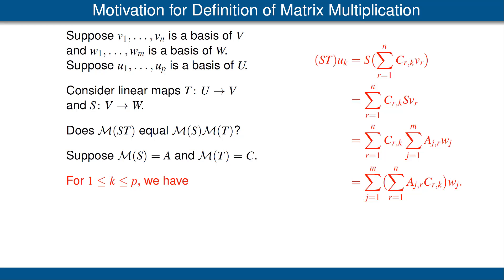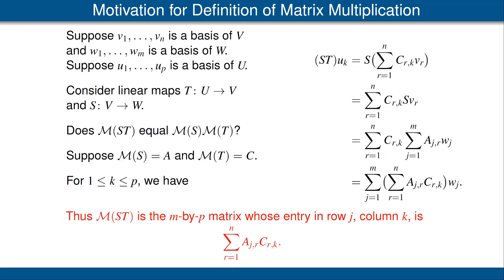Getting from the third line to the fourth line is just rearranging and changing the order of summation. We have now written ST applied to U sub K as a linear combination of the vectors W1 up to WM. By the definition of the matrix of the linear map ST, the coefficient of WJ in this sum is the entry in row J, column K of the matrix of S times T. Thus we have the following formula: the entry in row J, column K is given by the sum shown here. Notice that J and K are fixed — J appears as the first subscript of A, K appears as the last subscript of C, and the dummy summation variable R appears twice. You can think of those two instances of R as canceling each other out.